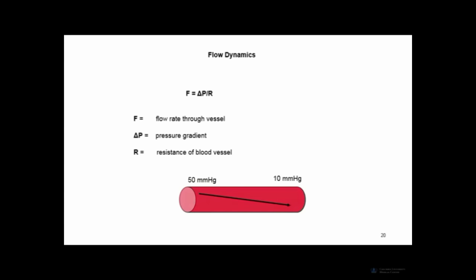The relationship between resistance to flow and radius is exponential. Small increases in radius produce huge drops in resistance and huge increases in flow. Even small decreases in radius will increase resistance dramatically and decrease flow.